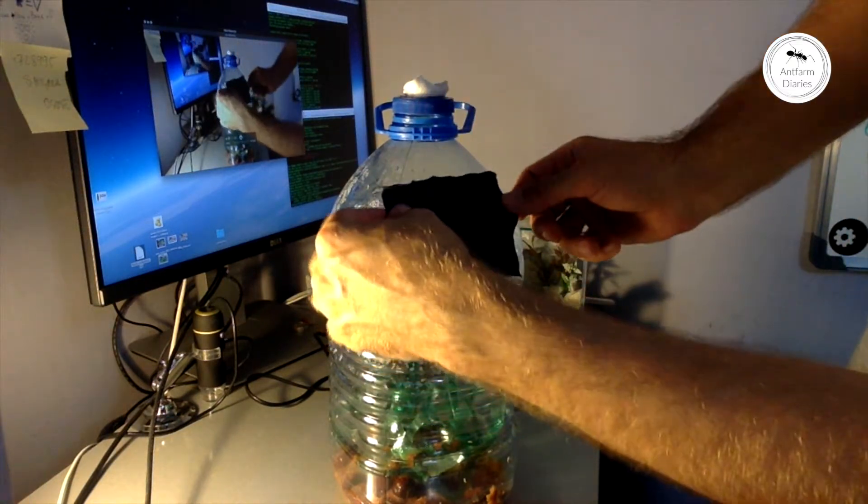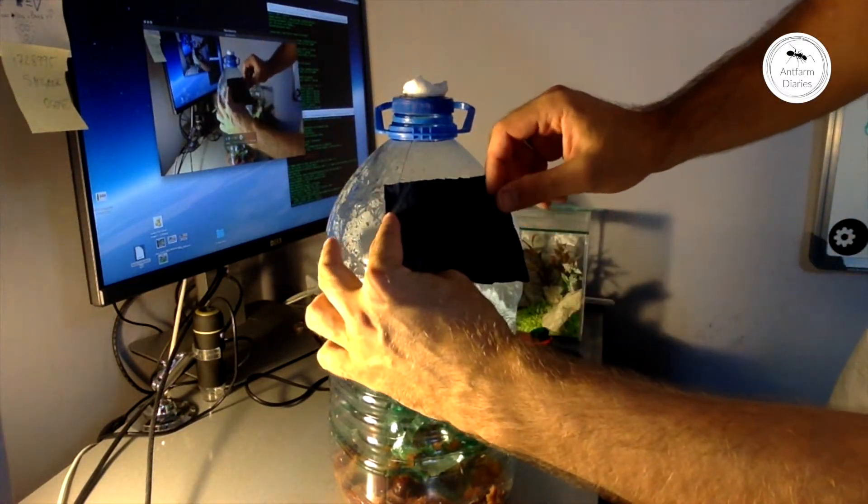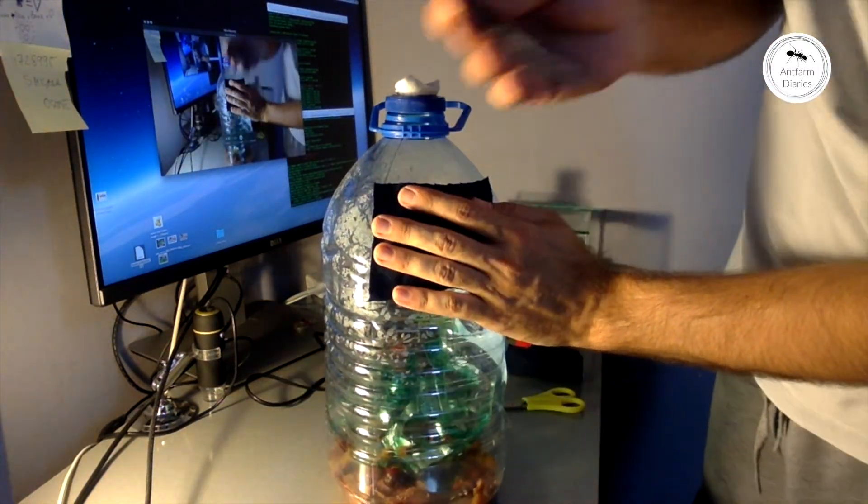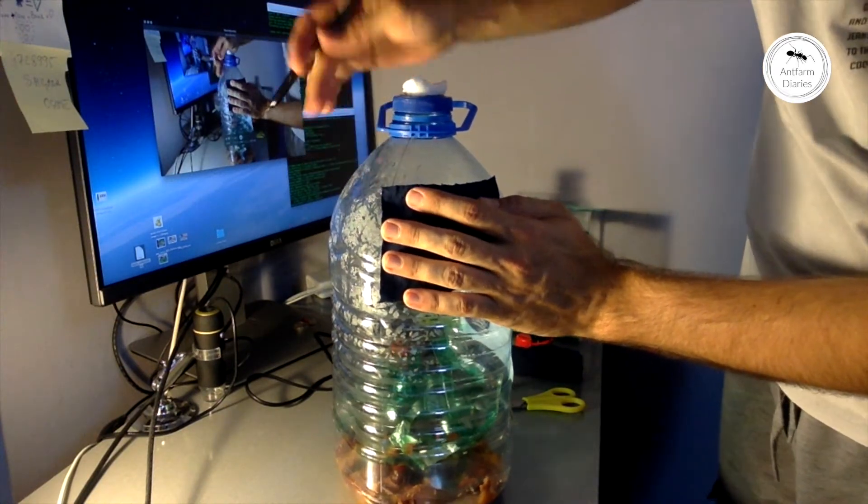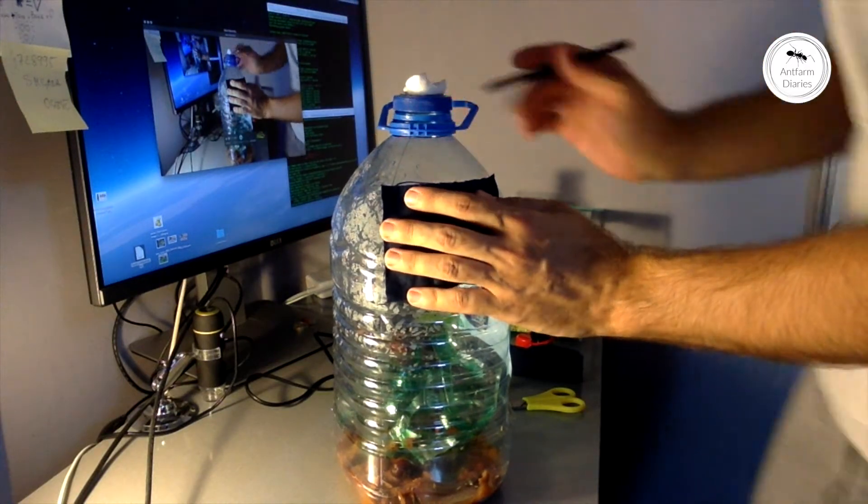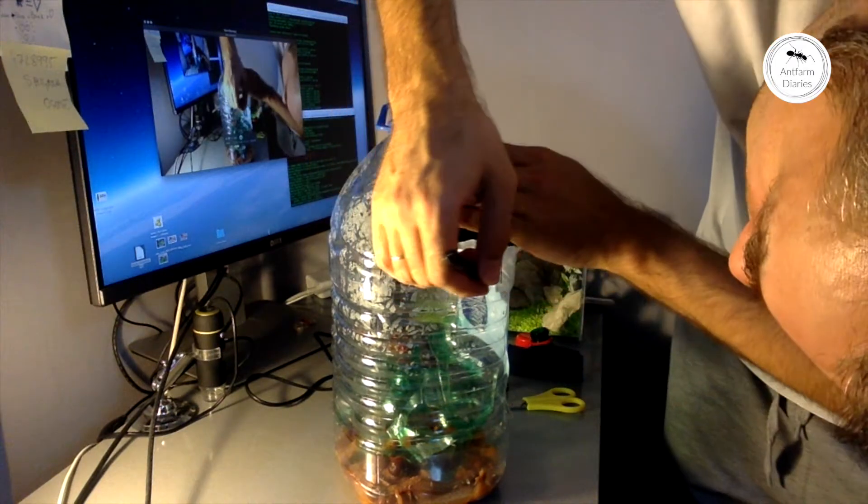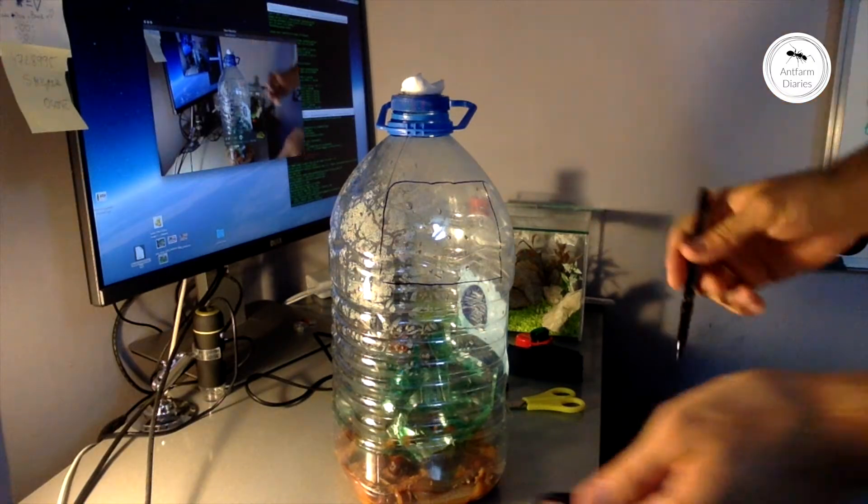As you can see there is water on the inside of the bottle, and the pieces of cloth will allow for ventilation - this is why we need it.